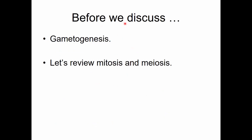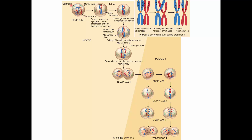Many of you have had general biology and talked about mitosis and meiosis in a general way, so let's review before going on to spermatogenesis. In mitosis: chromosomes are condensed and replicated, they line up on the metaphase plate, sister chromatids are separated — one replication, one division — and two identical cells result.